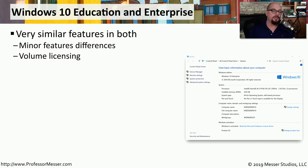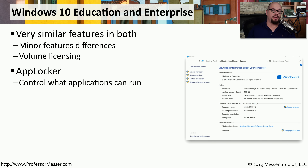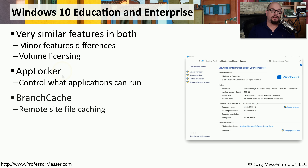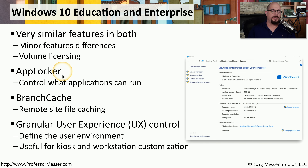Windows 10 Education and Windows 10 Enterprise are very similar to each other, with only minor differences in features. Both versions are managed using Windows volume licensing. Larger-scale features included with these editions include AppLocker, which allows the administrator to determine what applications are able to run on the system. These editions also include BranchCache, so you can cache files locally at a remote location instead of pulling them across a slow wide area network. Additionally, they allow granular user interface (UX) control, letting administrators configure the environment for end users or lock it down for kiosk use.